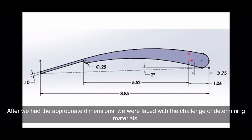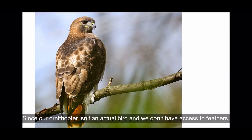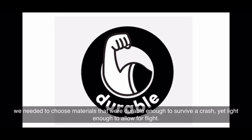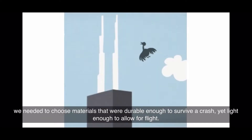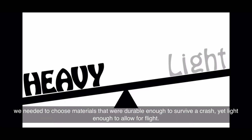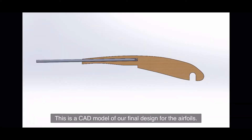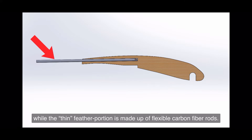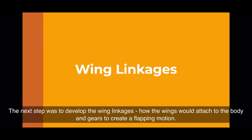After we had the appropriate dimensions, we faced the challenge of determining materials. Since there isn't an actual bird and we don't have access to feathers, we needed materials that were durable enough to survive a crash yet light enough to allow for flight. This is a CAD model of our final design for the airfoils: the thick bone and muscle portion of the wing is made of balsa wood, while the thin feather portion is made of flexible carbon fiber rods.